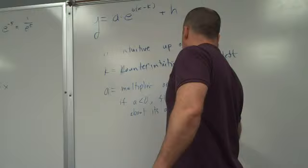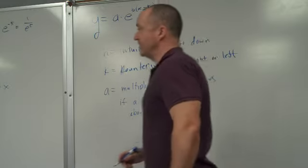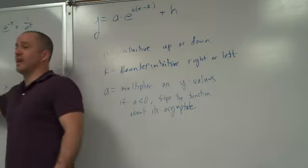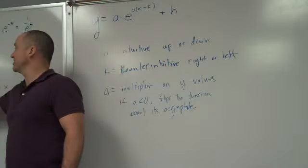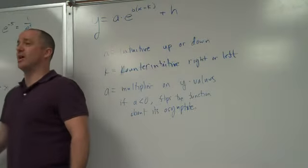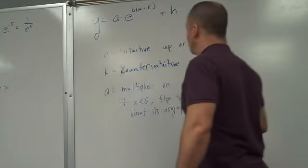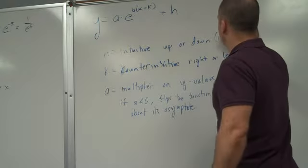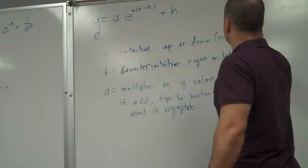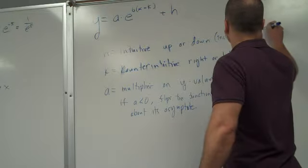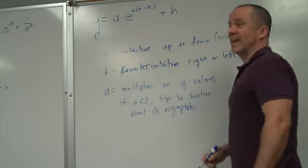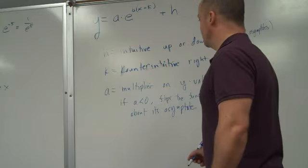Actually, what it does now, if A is negative, it flips the function about its asymptote. You're very close. Good job, Connor. Now, if it hasn't been moved up or down, that means it will still flip around the x-axis. But if there's a plus H, that will move the asymptote up or down, too. So, I should put that in here. Intuitive up or down, including asymptotes. So, the asymptote, the horizontal asymptote actually moves as well.